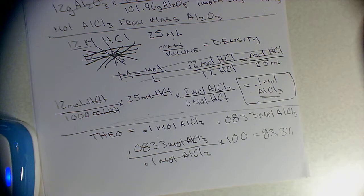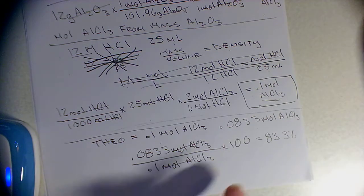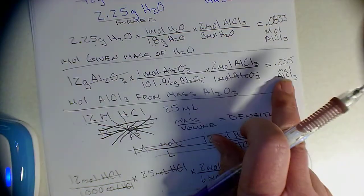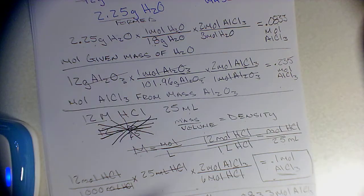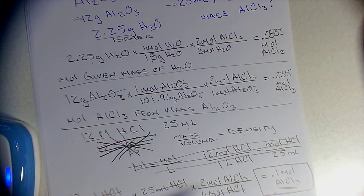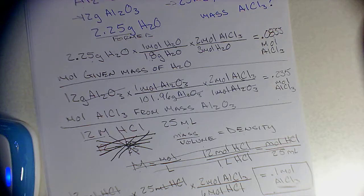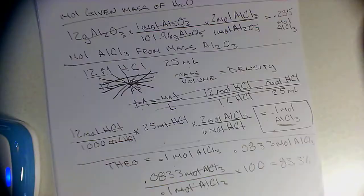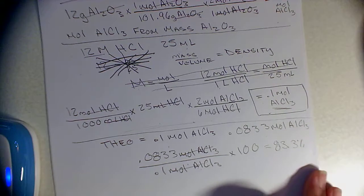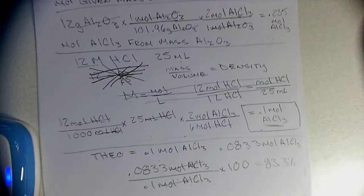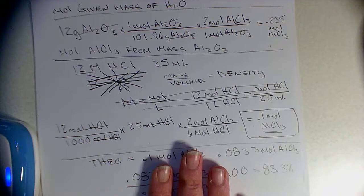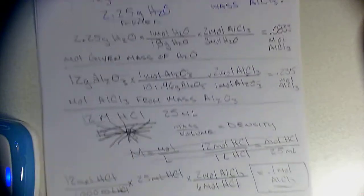So I can look back: the limiting reactant is HCl, and the percent yield is 83.3%. The only question I didn't ask was how much Al₂O₃ was left over — we could have done that too. These are big concepts you want to be comfortable with, because in lab these calculations have to be completed during class. Please make sure you understand this, and come see me if you need help.